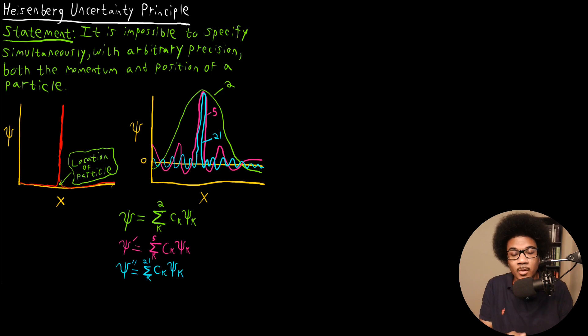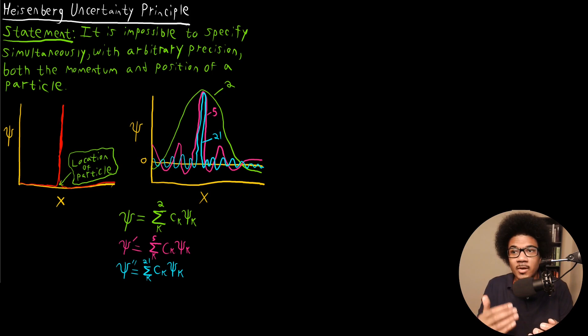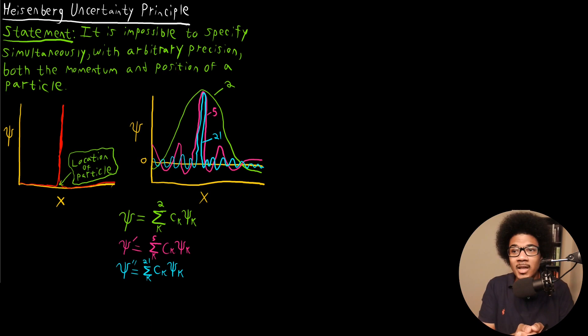The statement of the Uncertainty Principle is that it is impossible to specify simultaneously with arbitrary precision both the momentum and position of a particle. So if you're interested in the momentum and position of a particle, it is impossible to know them both with an arbitrary degree of certainty. If you wanted to know with 100% certainty both the position and momentum of a moving particle, it is impossible.